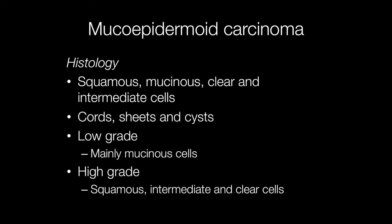The term mucoepidermoid carcinoma gives a good clue as to what cell types are likely to be present. These include squamous, mucinous, clear and intermediate cells that are present in cords, sheets and cysts. The low grade tumours tend to be composed predominantly of mucinous cells, whereas the high grade tumours tend to have a greater proportion of squamous, intermediate and clear cells.